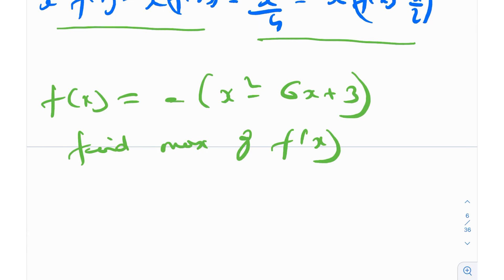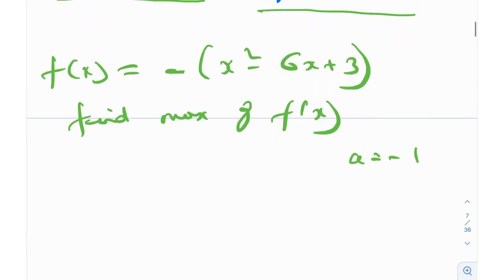This is a quadratic expression with leading coefficient negative, a = -1, where a is the leading coefficient. So it's a downward opening parabola, so it will have a maximum value. If a was positive, it would be an upward opening parabola, and hence it would have a minima.